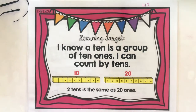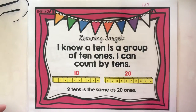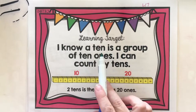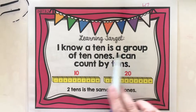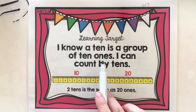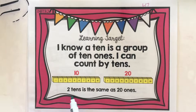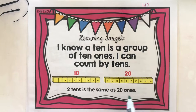I'm using Allison Palm's math lessons from Teachers Pay Teachers. She created lessons that show how we can understand tens. This says: I know that a ten is a group of ten ones. I can count by tens — two tens is the same as twenty ones. Here is one group of ten.